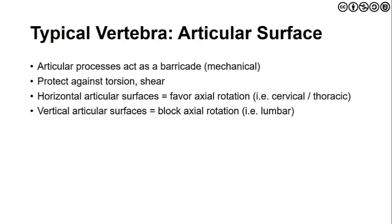From a horizontal standpoint, the cervical and thoracic spine favor more rotation. However, the facet joint surface changes as we move toward the lumbar spine, becoming more vertical and perpendicular to the vertebral body, serving as more of a blockade to axial rotation by the time we reach the lumbar spine.